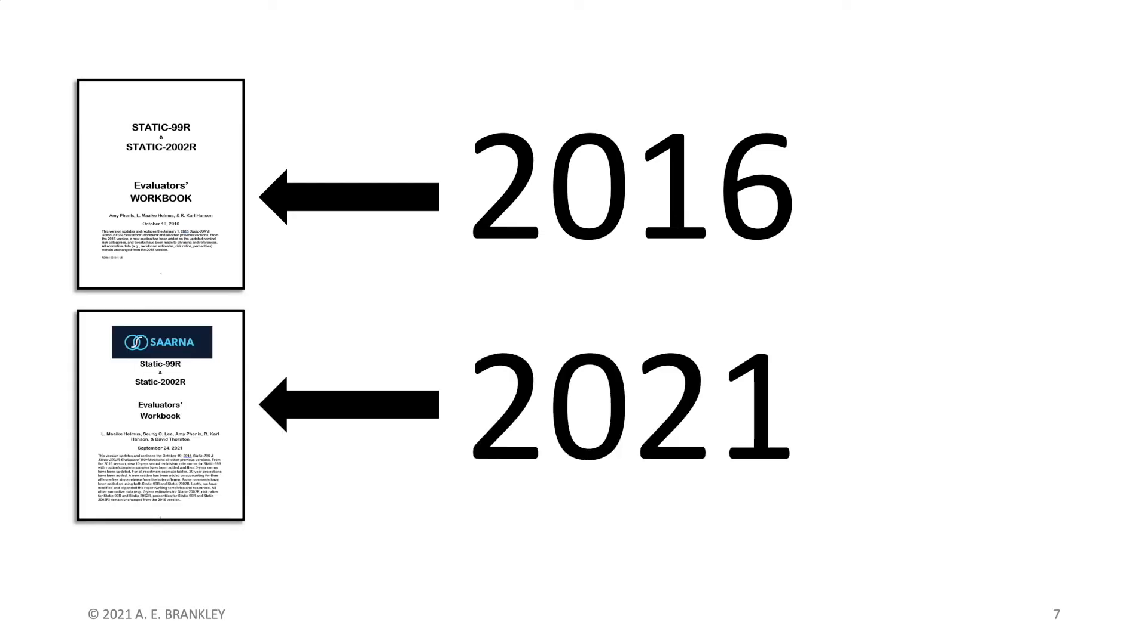So let's begin this video by comparing the 2016 version of the evaluators workbook to the 2021 version. Both documents serve the same function. They help evaluators interpret and communicate the results of their static assessments. This is accomplished using three types of information.